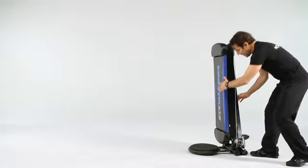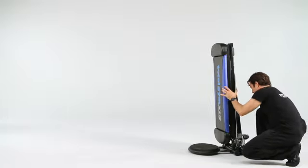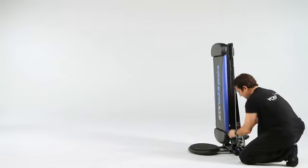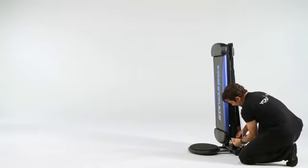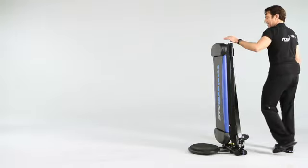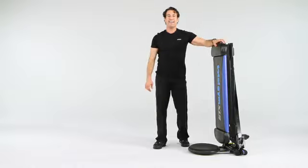Then you're going to come down and take your safety pin and place it into its secure spot. And that's how you fold your Total Gym XLS.